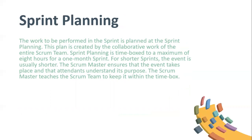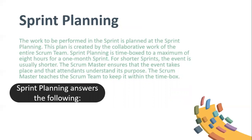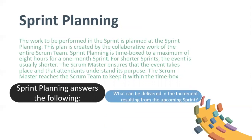Sprint planning: the work to be performed in the sprint is planned at the sprint planning. This plan is created by the collaborative work of the entire Scrum team. Sprint planning is time-boxed to a maximum of eight hours for a one-month sprint; for shorter sprints the event is usually shorter. The Scrum Master ensures that the event takes place and that attendants understand its purpose. The Scrum Master teaches the Scrum team to keep it within the time box. Sprint planning answers the following questions.